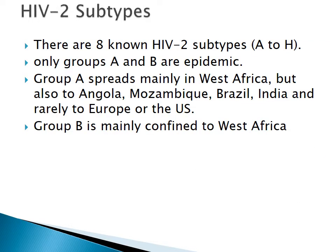For HIV-2, eight different subtypes have been reported — subtype A through H. Group A spreads mainly in West Africa and has also been reported in Angola, Mozambique, Brazil, India, and in Europe among those who have had contact with West Africa.